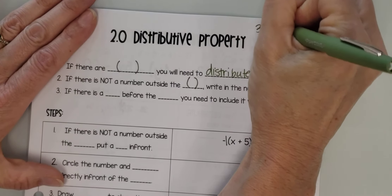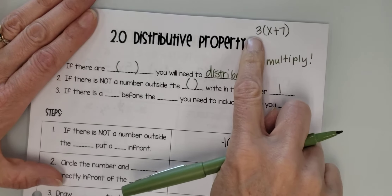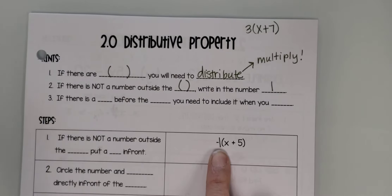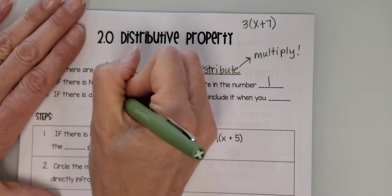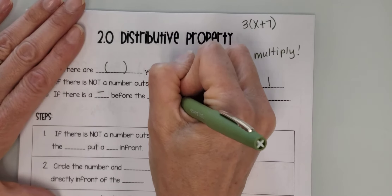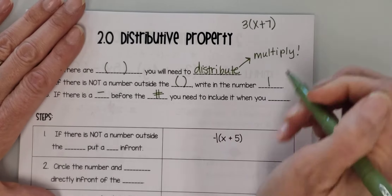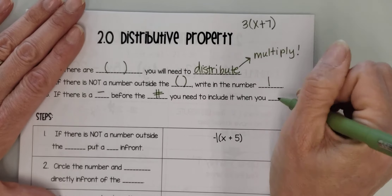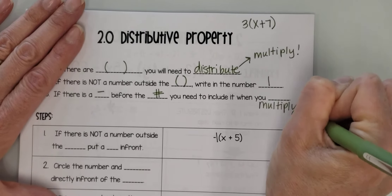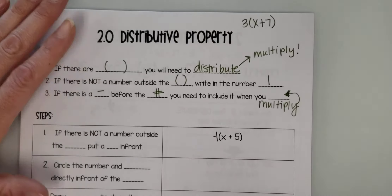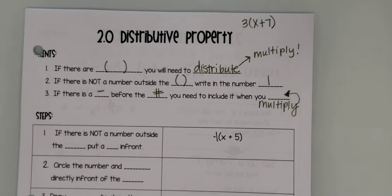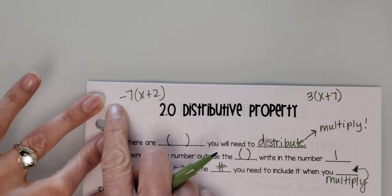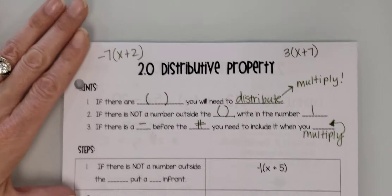For example, if we had 3x plus 7, there's a number and we don't need to write the 1. But if we've got a negative sign out there but no number, we're going to put the 1 in there — manually write that 1 in. If there is a negative before the number, you're going to need to include it when you multiply. For example, we wouldn't just distribute a 7 — we would distribute the negative 7 all the way through. So let's do some practice here.